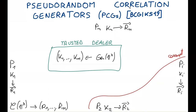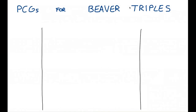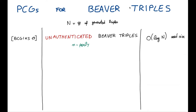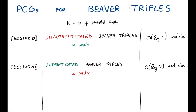Recently, there has been work on PCGs for beaver triples. The first work is by Boyle et al. at Crypto 2019, where they designed a PCG that generates n unauthenticated beaver triples for n parties with logarithmic seed size in the number of triples generated. One year later, the same authors designed another PCG for authenticated beaver triples, and the seed size is still logarithmic in n. However, this construction works only in the two-party setting.